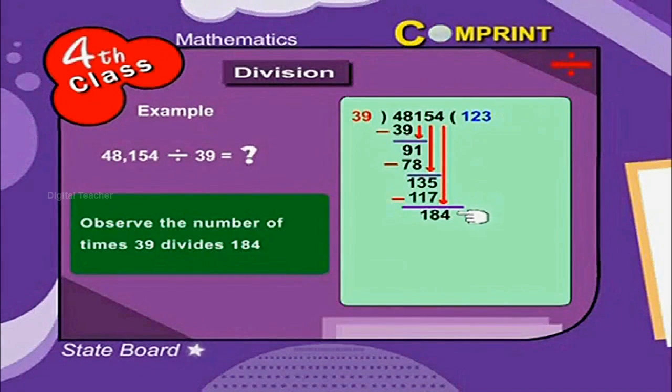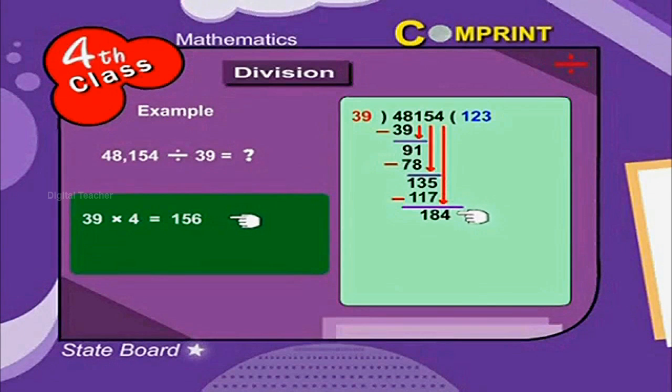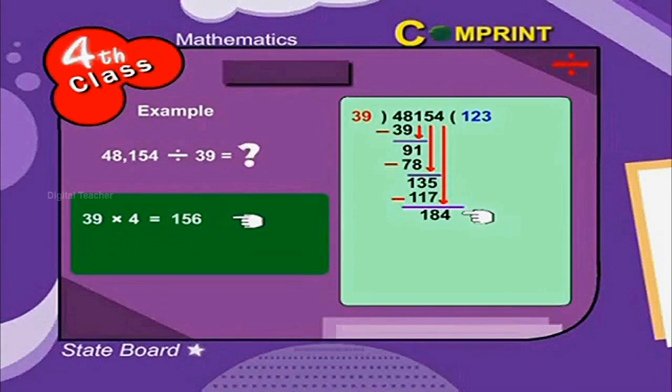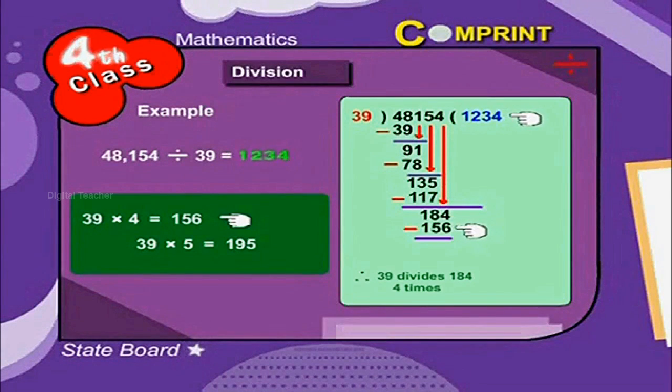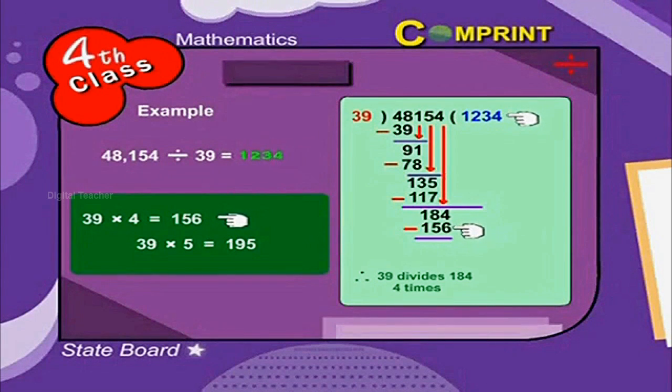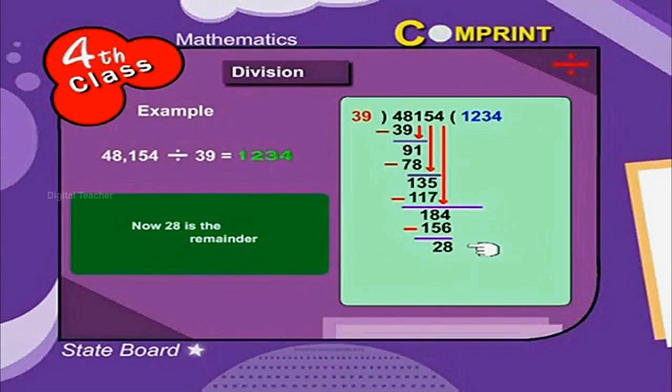Observe the number of times 39 divides 184. 39 into 4 is equal to 156, 39 into 5 is equal to 195. Therefore, 39 divides 184 four times. Now 28 is the remainder.